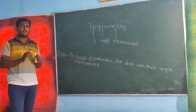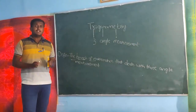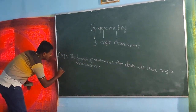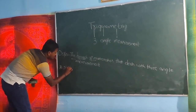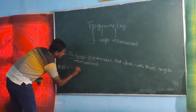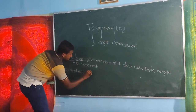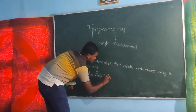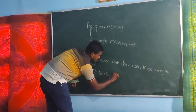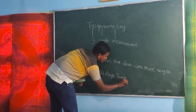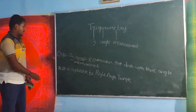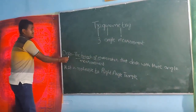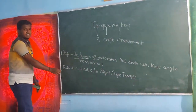Another thing I have to say about trigonometry is that trigonometry is applicable to the right angle triangle. Trigonometry is applicable to the right angle triangle. At the initial, we studied what is trigonometry, the definition of trigonometry, and how it is applicable to the right angle triangle.